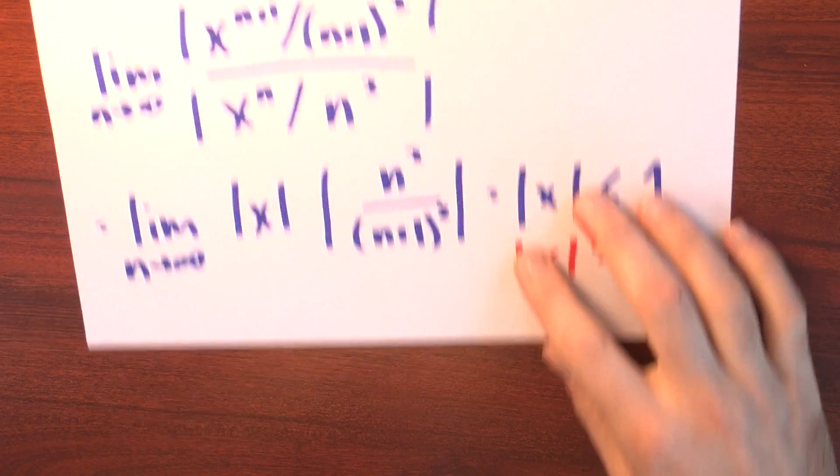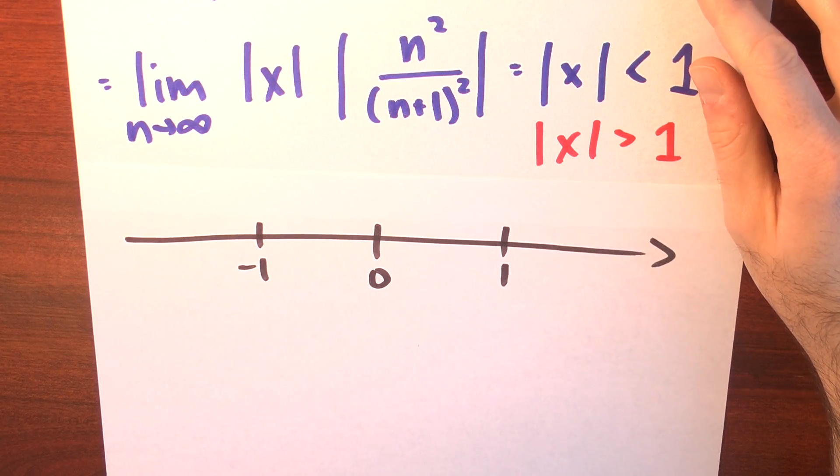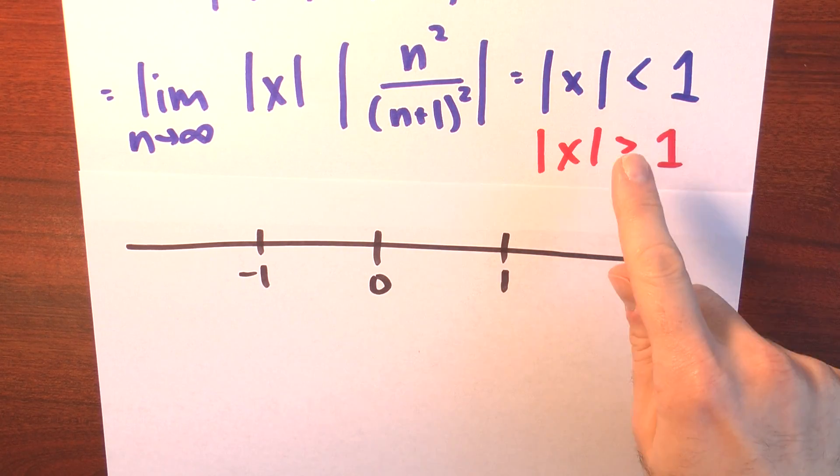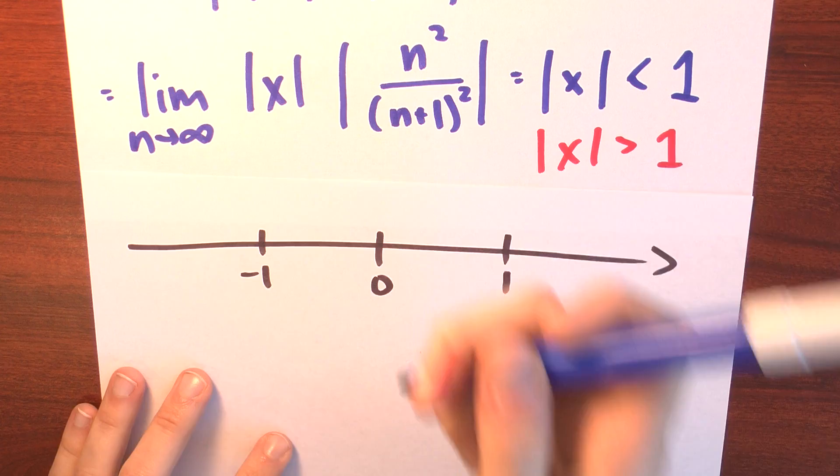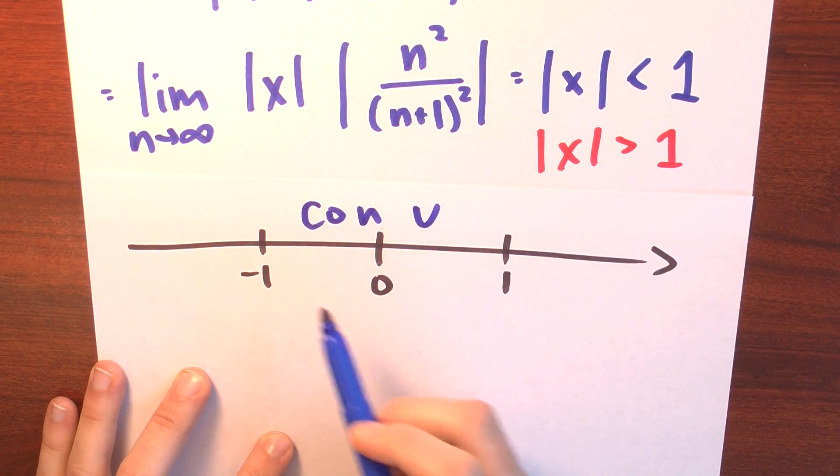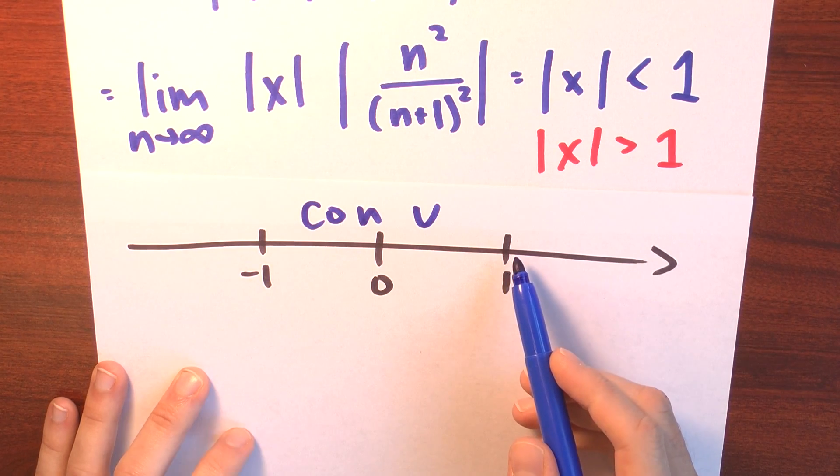Putting it all together, what's the radius of convergence? So, to think about that, let's draw a diagram. Here we've got a number line. And what I know is that when the absolute value of x is less than 1, then the series converges absolutely. So, that tells me that the series converges when x is between minus 1 and 1.